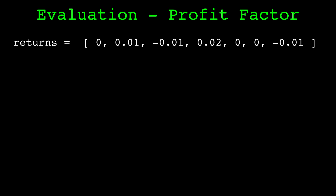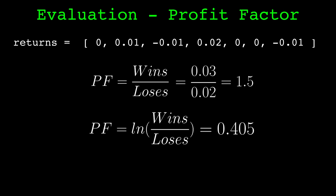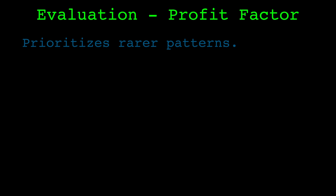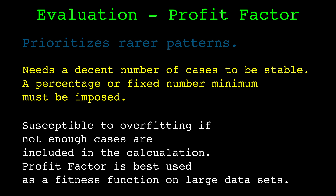Our next fitness function is the profit factor. It is calculated by summing the winning returns and summing the losing returns and taking the ratio between the two. The raw profit factor will be above one when the pattern is profitable and below one when unprofitable. To conform to our greater-than-or-equal-to-zero requirement, I take the natural logarithm of the ratio and floor negative values at zero. Profit factor as a fitness function will prioritize patterns that occur rarely with a higher reward-risk ratio. Because rarer patterns tend to be prioritized, I require the pattern to occur at least a minimum number of times — I use 2.5% of the length of the dataset. If a tested pattern occurs less than the minimum number of times, I set its fitness to zero. The profit factor can be susceptible to overfitting, especially for finding patterns on smaller datasets. Overall, I believe the profit factor to be a better fitness function than total return.